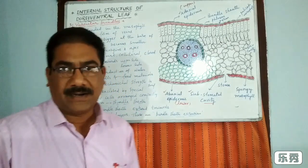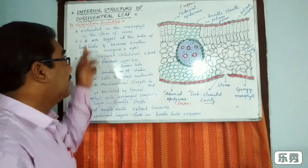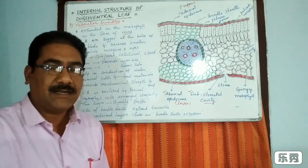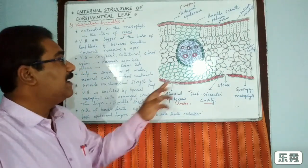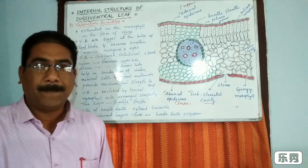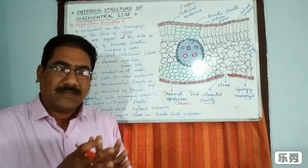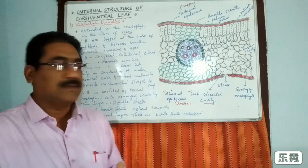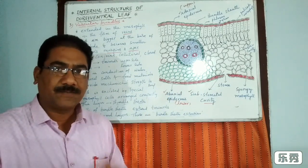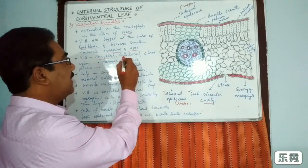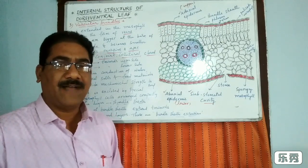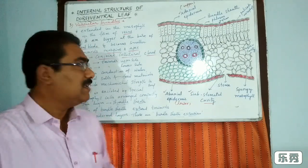The third important part is vascular bundles. Vascular bundles are extended in the mesophyll in the form of veins. They are larger at the base of the leaf blade and become smaller towards the margins and apex. In the dicot leaf, vascular bundles are conjoint, collateral, and closed type.